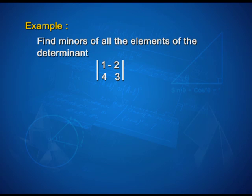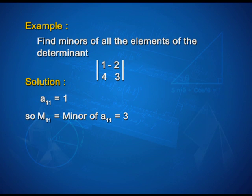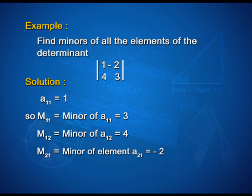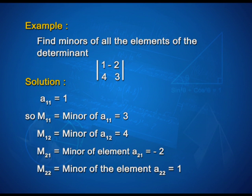Let us take up one more example. Find the minors of all the elements of the determinant 1, 1, minus 2, 4, 3. We have a_11 equal to 1, so M_11 is equal to minor of a_11, that is 3. M_12 is minor of a_12, that is 4. M_21 is the minor of the element a_21, it is equal to minus 2. Similarly, M_22 is equal to minor of the element a_22, that is equal to 1.